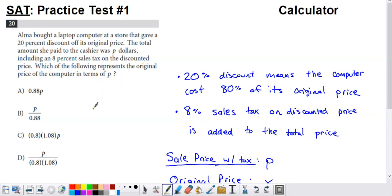So it's saying that someone bought a laptop computer at a store that gave them a 20% discount off the original price. The total amount she paid to the cashier was P dollars, including an 8% sales tax on that discounted price. Which of the following represents the original price of the computer in terms of P?